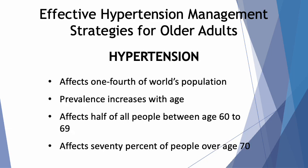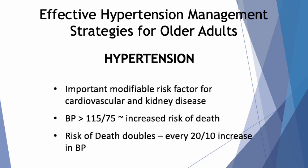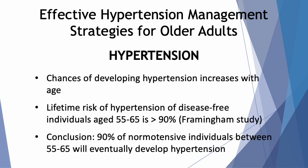Hypertension affects a quarter of the world's population and its prevalence increases with advancing age. It affects as much as half of all people between the ages of 60 to 69 years old, and over 70% of those over 70 years old. Hypertension is an important modifiable risk factor for cardiovascular and kidney diseases. Elevation of blood pressure beyond 115 over 75 mmHg is correlated with increased risk for death, and the risk of dying doubles for every 20 over 10 mmHg increase in blood pressure. As people age, the chances of developing hypertension increases.